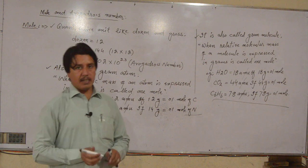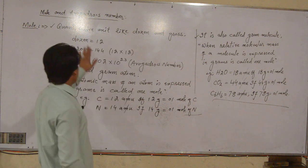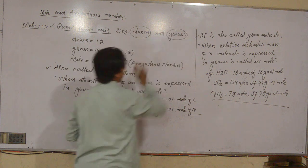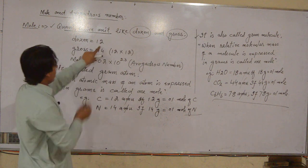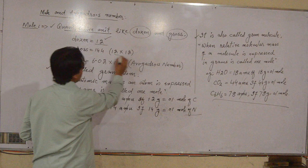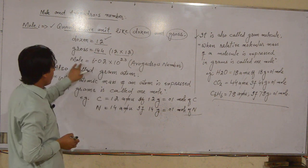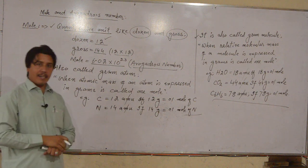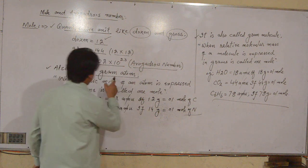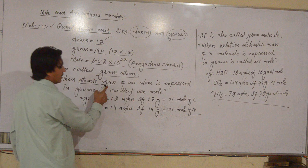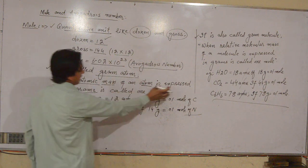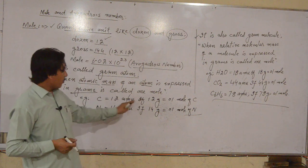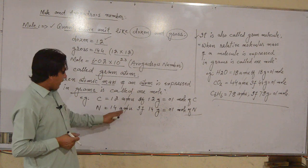Students, remember three facts about the mole. First fact: the mole is a quantity unit like dozen and gross. One dozen equals 12, one gross equals 144. One mole equals 6.02 × 10 to the power 23 particles — this is Avogadro's number. Second fact: the mole is also called gram atom. When the atomic mass of an atom is expressed in grams, that is one gram atom. For example, carbon has relative atomic mass 12 amu, so 12 grams of carbon equals one mole.